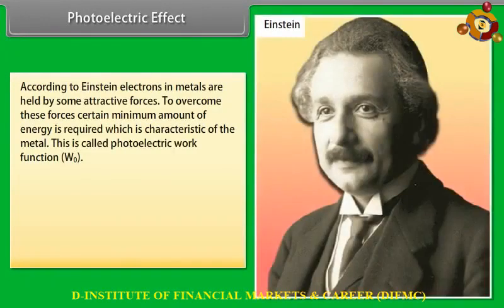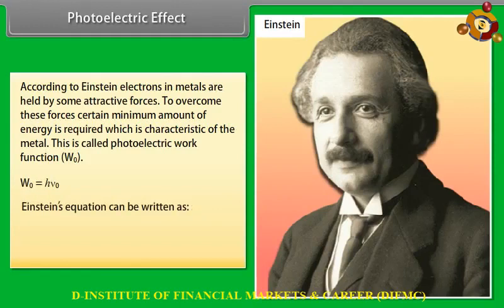According to Einstein, electrons in metals are held by attractive forces requiring a minimum energy to overcome — this is called the photoelectric work function W₀, where W₀ = hν₀. Einstein's equation: hν = hν₀ + KE, therefore KE = hν − hν₀.